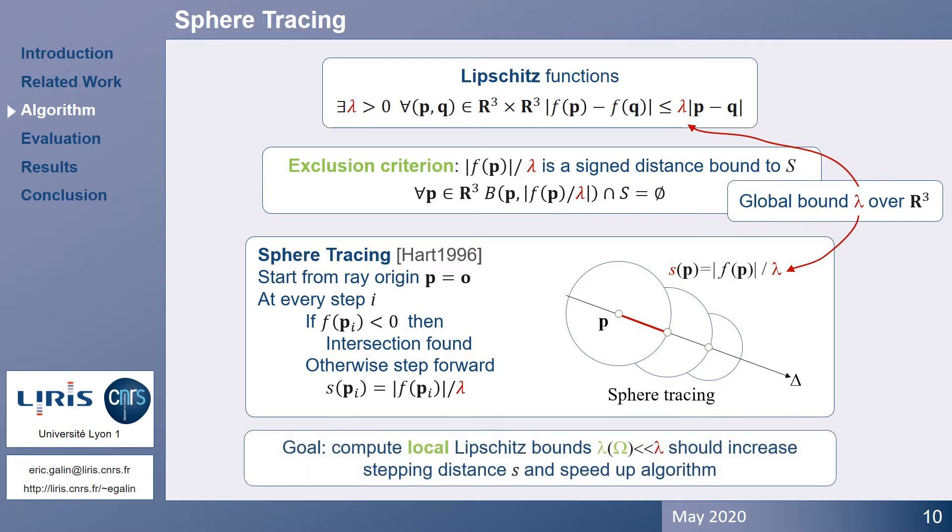Therefore, our goal is to compute the local Lipschitz bounds at every step, which should be smaller than lambda. Consequently, the stepping distance should increase, which will eventually result into fewer field function evaluations and a faster algorithm.